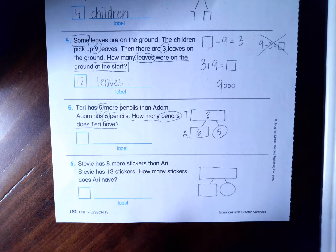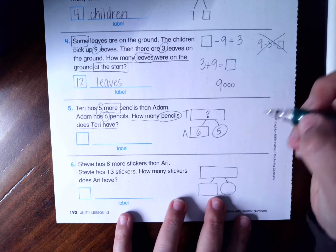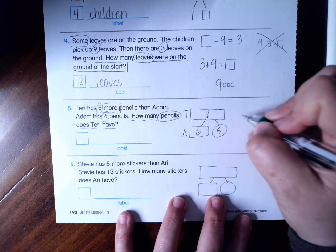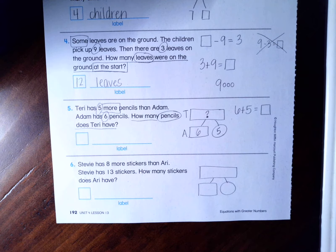So my question mark goes in the top in Tori's box. That's what I'm trying to figure out. And that tells me that I'm missing a total. Now I can add six plus five. And I get an answer of 11.